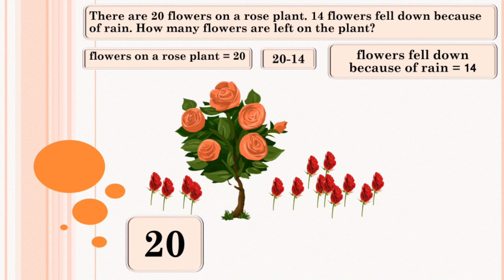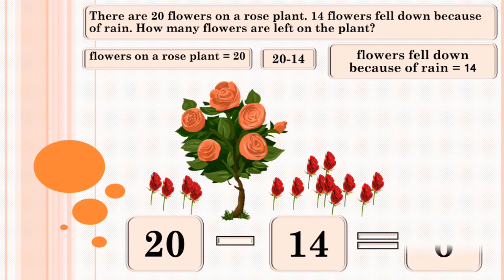We subtract 14 from 20. 20 minus 14 equals 6. So, 6 flowers are left on the plant.